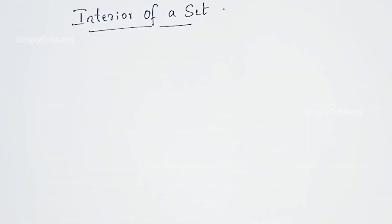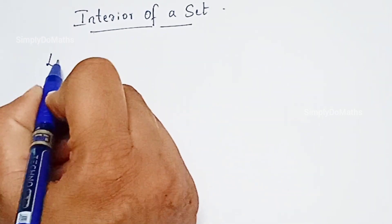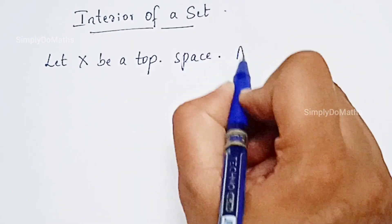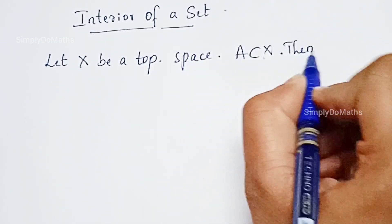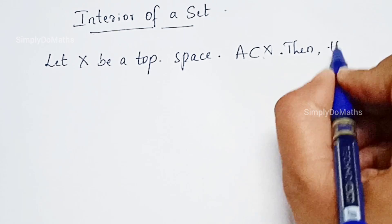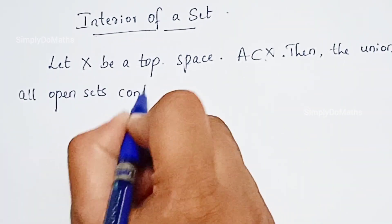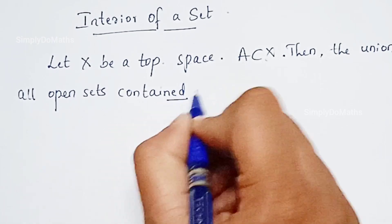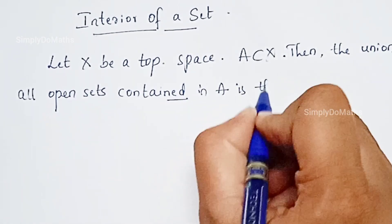Hello everyone, let's learn about the interior of a set. Let capital X be a topological space and A be a subset of X. Then the union of all open sets contained in A — and it's very important that they be contained in A — is called the interior of A.